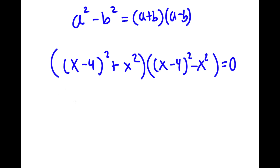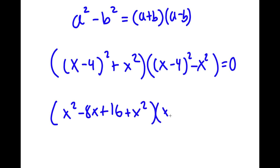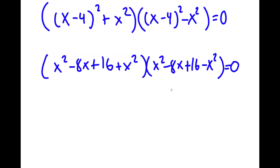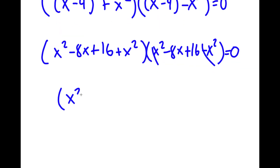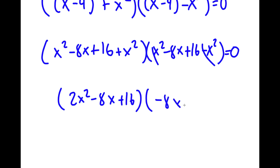x minus 4 squared — that's going to be x squared minus 8x plus 16. Now I have x squared minus 8x plus 16 plus x squared times x squared minus 8x plus 16 minus x squared is equal to 0. The x squared terms cancel out, and I have 2x squared minus 8x plus 16 times negative 8x plus 16 is equal to 0.